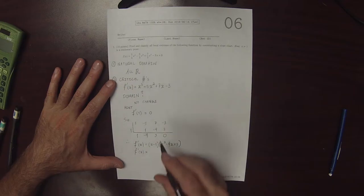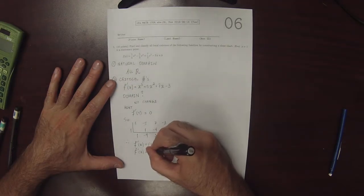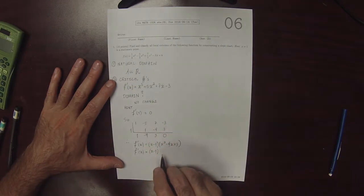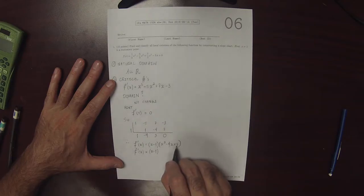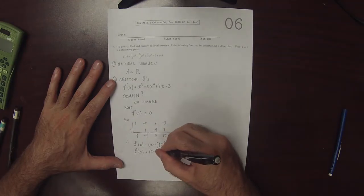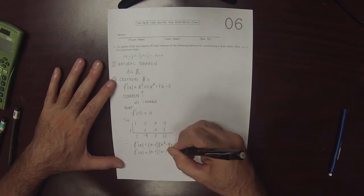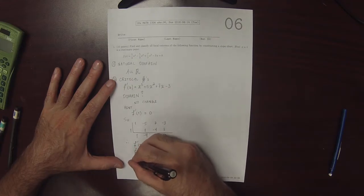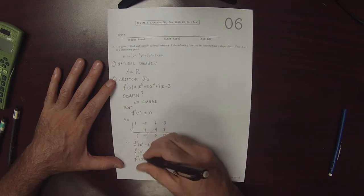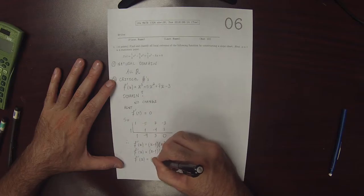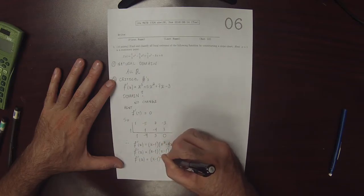So this one factors as 2 numbers whose product is 3 and whose sum is -4. How about -1 and -3? So this is the factorization of the derivative: (x - 1)² multiplied by (x - 3).